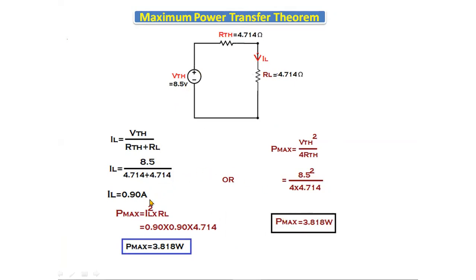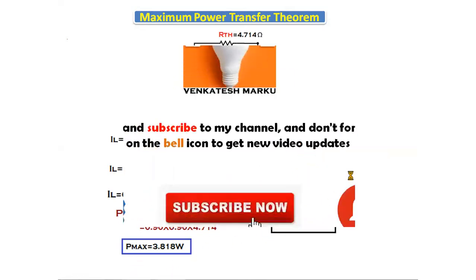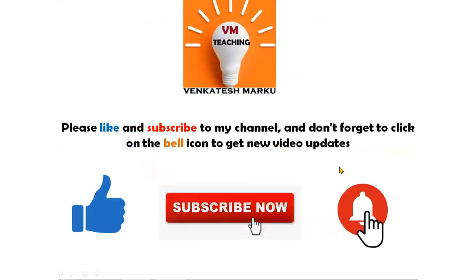We can use either formula — IL squared into RL, or Vth squared divided by 4·Rth — and we will get the same answer. This concludes the Maximum Power Transfer Theorem. In the next class, we will discuss the next topic.